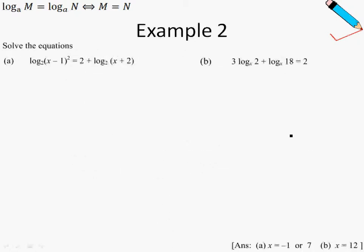Moving on, in example 2, we will still be applying the similar laws of logarithm that we have learned in the previous chapters. And at this point in time, let me just perform some tricks to the 2 over here. So 2 can be written as 2 times log_2 2. Recall that log_2 2 is just 1.